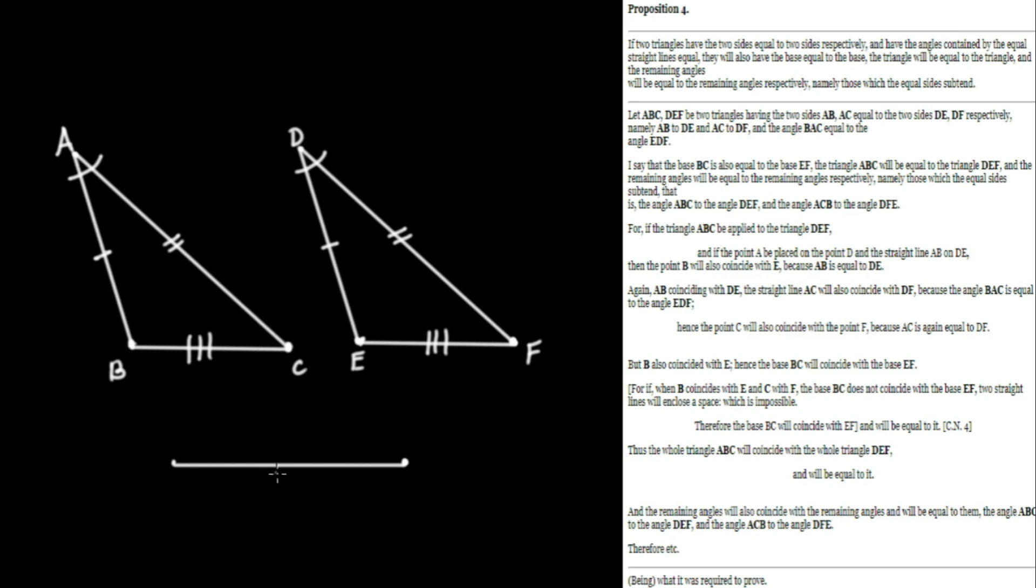That is to say, angle ABC will coincide with DEF upon this superposition. And likewise, the angle ACB will coincide with DFE, and therefore those will be the same. So we have the equality of these two angles. And also of these angles.